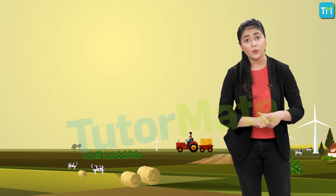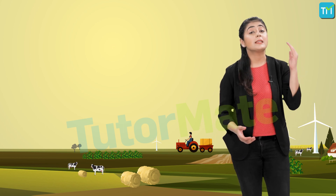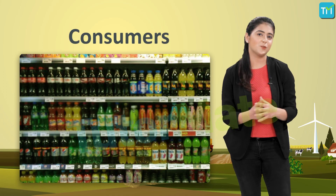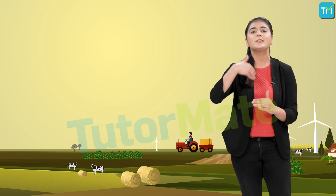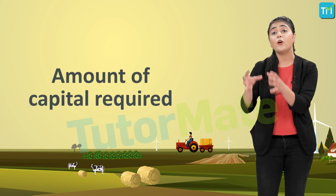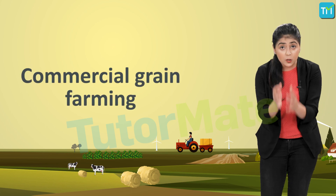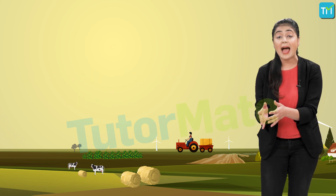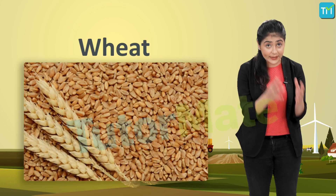Let us now look at commercial farming. As the name suggests, commercial farming involves selling of the products in the market to the consumers. Crop cultivation and animal rearing are done in order to sell the produce. In this type of farming, the area under cultivation and the amount of capital required are both large, and machines are used for most of the activities.